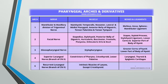Third pharyngeal arch: nerve is the glossopharyngeal nerve; muscles include stylopharyngeus; bones and ligaments are the greater cornu of hyoid and lower part of the body of hyoid. Fourth arch: nerve is the superior laryngeal nerve; muscles are constrictors of the pharynx, cricothyroid, and levator palatini; bones and ligaments are the laryngeal, thyroid, and epiglottic cartilages. The sixth arch: nerve is the recurrent laryngeal nerve; muscles are the intrinsic muscles of the larynx except cricothyroid.